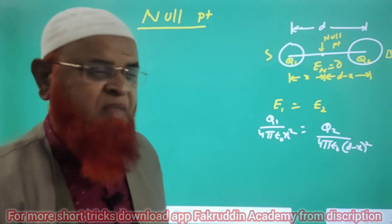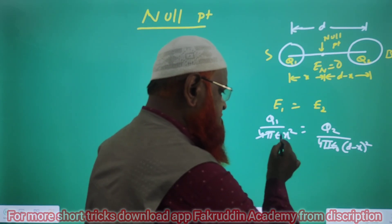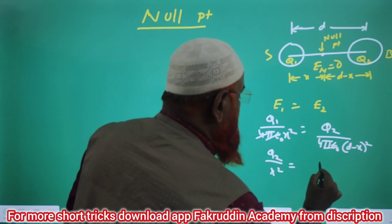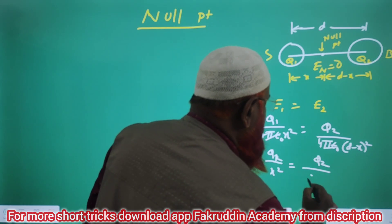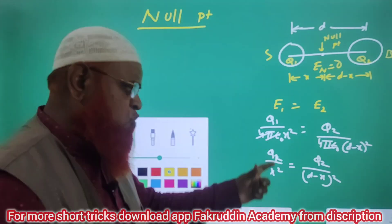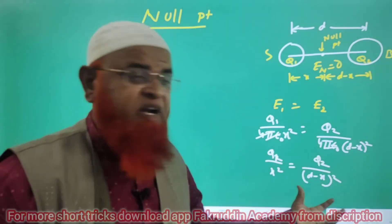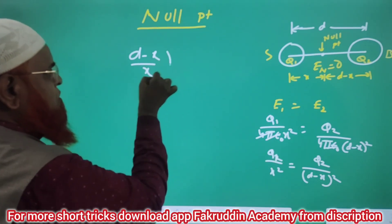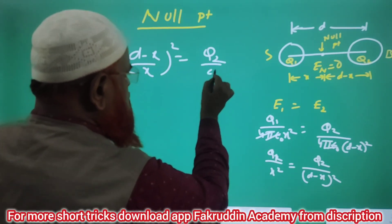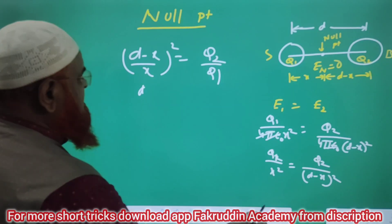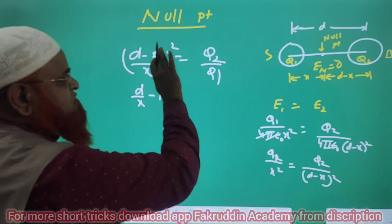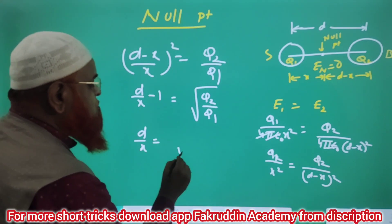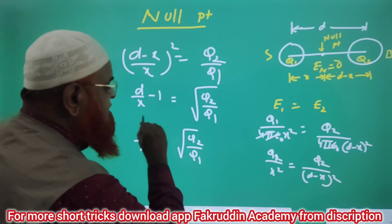It is (D minus X) whole squared. Then 4π ε₀ and 4π ε₀ get cancelled. What is left is Q1 by X squared equals Q2 by (D minus X) whole squared. So take (D minus X) in the numerator: (D minus X) whole squared by X squared equals Q2 by Q1. If you partially divide them, you get D by X minus 1, and squaring that side gives Q2 by Q1. Therefore, D by X equals the square root of Q2 by Q1, plus 1.